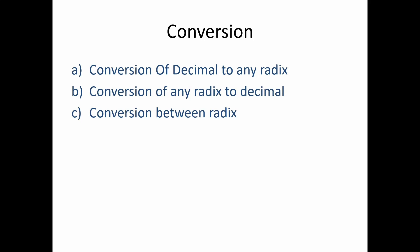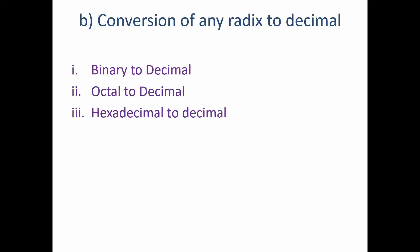We are done with the conversion of decimal to any radix. Next we will see conversion of any radix to decimal — if the given is binary, octal, or hexadecimal, how to convert it into decimal.